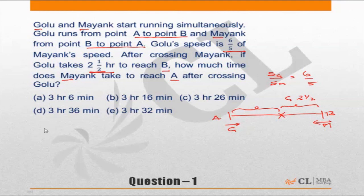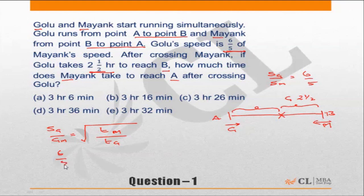Most of you will solve this using the formula that the ratio of speeds of Golu and Mayang is inversely proportional to the time taken by them after they meet. The speed of Golu to speed of Mayang is 6/5, which equals time taken by Mayang to reach his destination after crossing (what we need to find) divided by time taken by Golu, which is 2.5 hours.